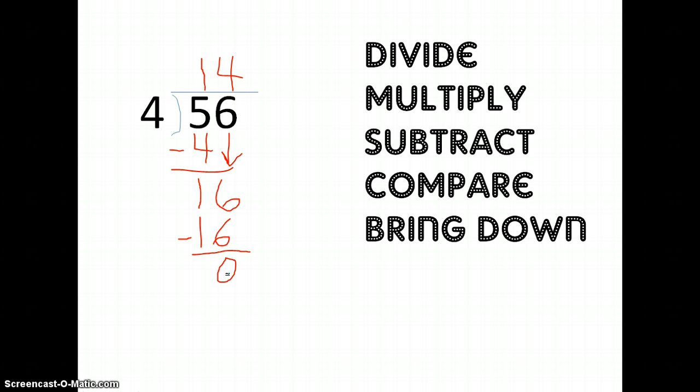Let's try another one. This problem is 88 divided by 5. The first thing I'm going to do is divide the tens. 5 will go into 8 one time. 1 times 5 is 5. Now I'm going to subtract. 8 minus 5 is 3.